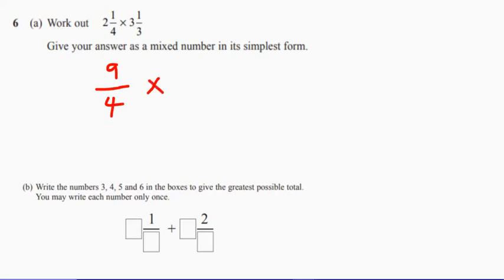Three and a third is the same as, well, think about each whole one - that's three thirds, isn't it? So three of them, that's nine plus the extra one, so we've got ten thirds.